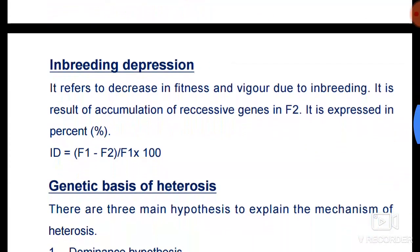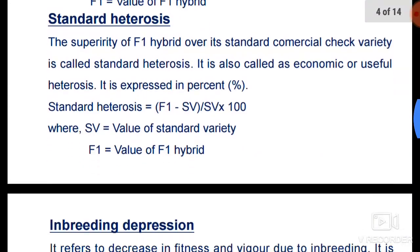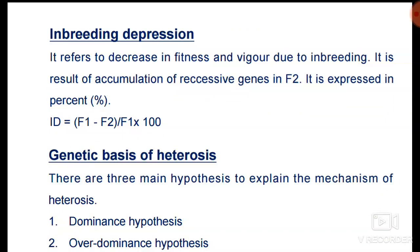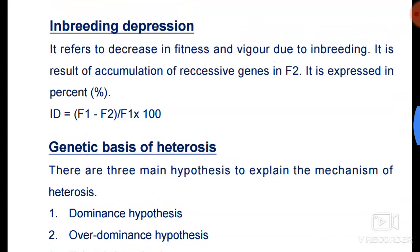The next topic is inbreeding depression. Inbreeding depression refers to the decrease in fitness and vigor due to inbreeding. It results in accumulation of recessive genes in F2, and it is expressed as a percentage. The formula is: Inbreeding Depression = (F1 − F2) / F1 × 100.